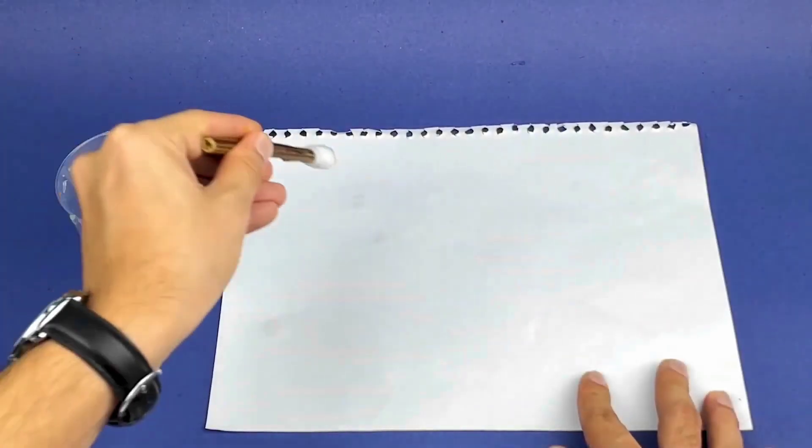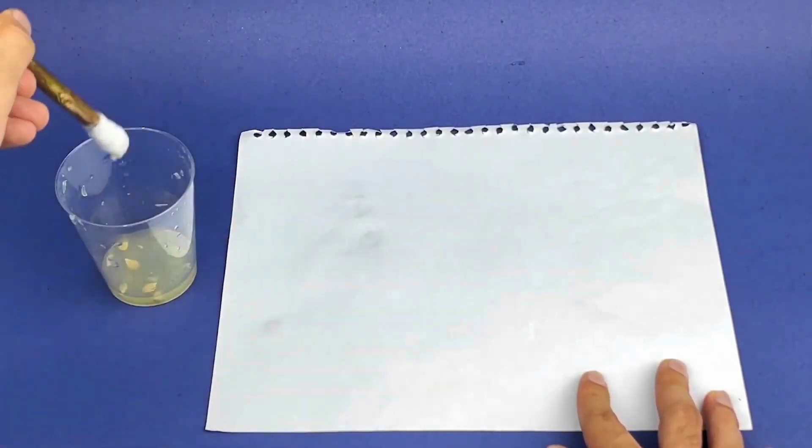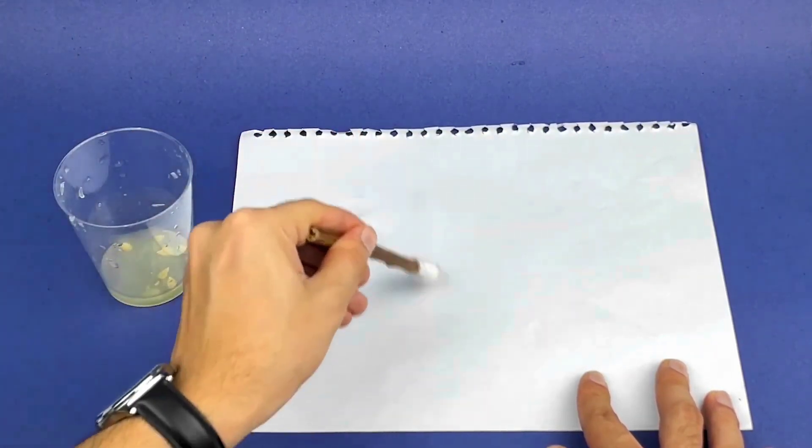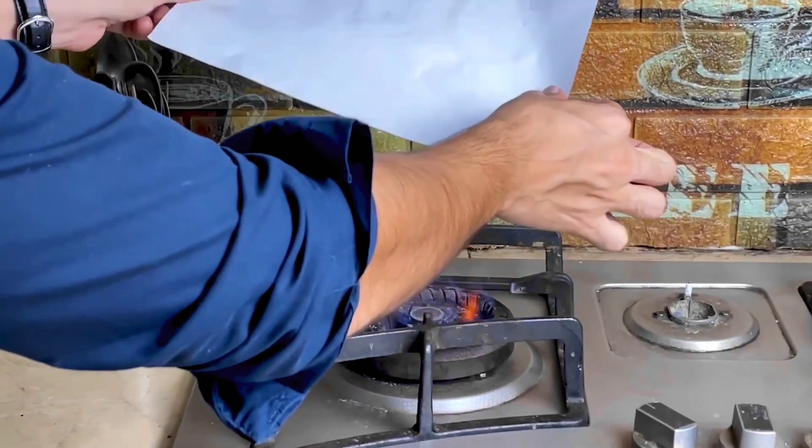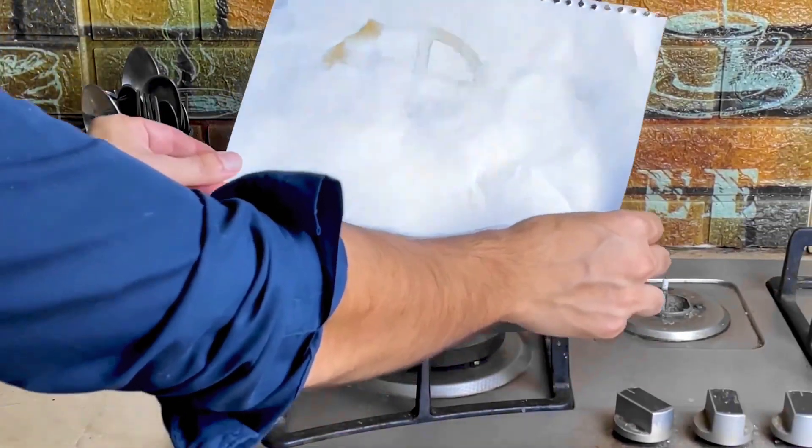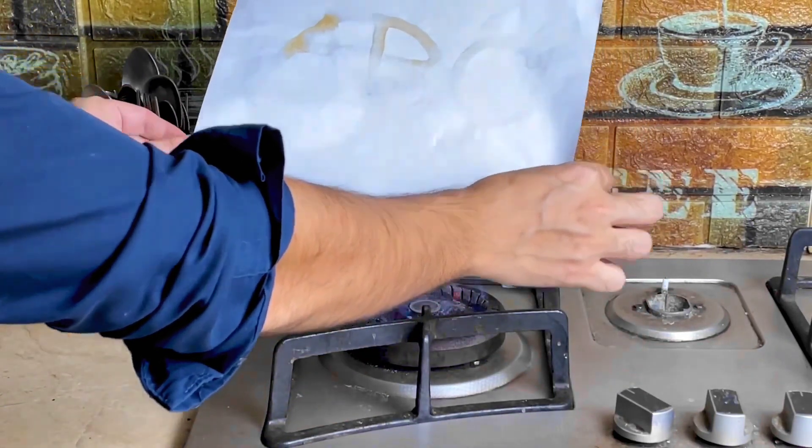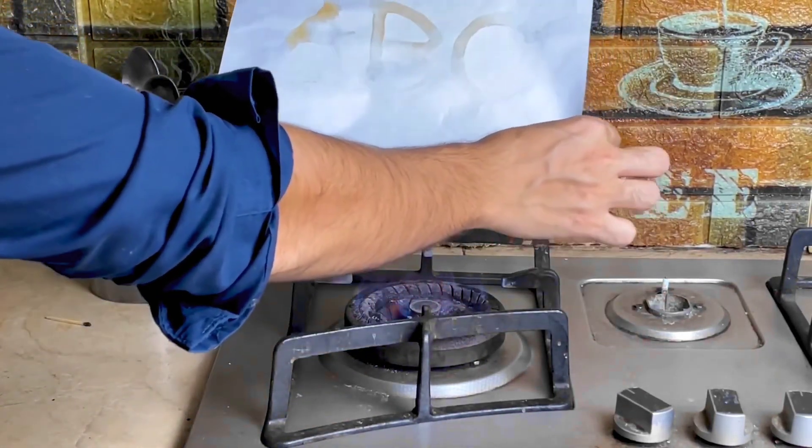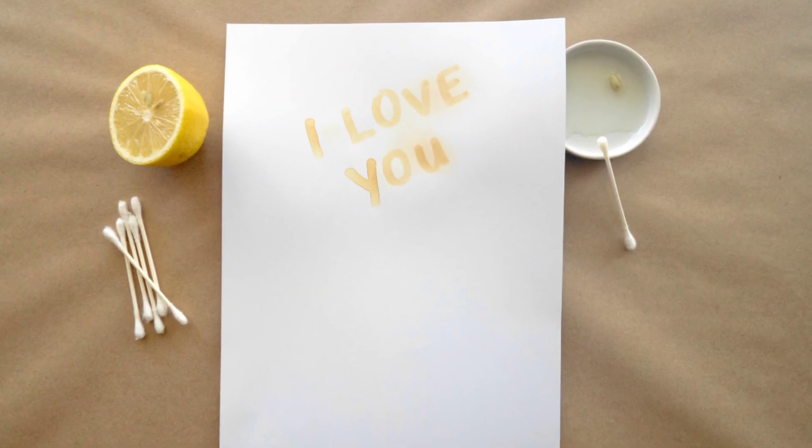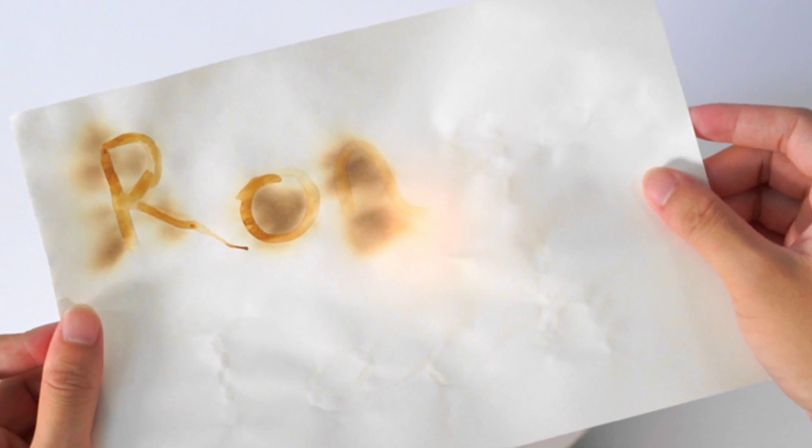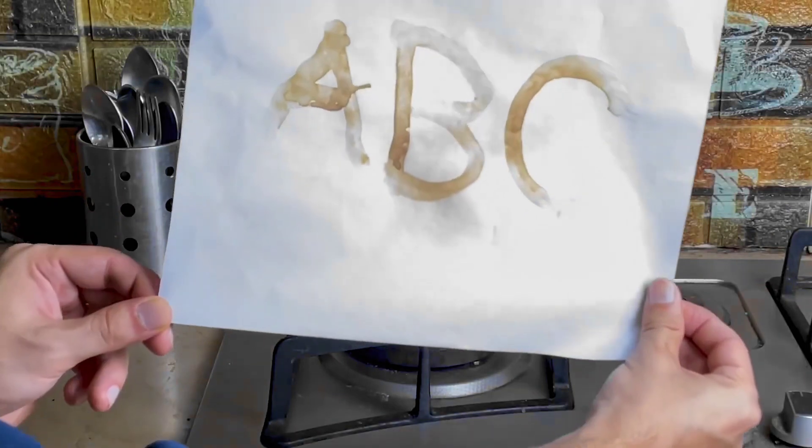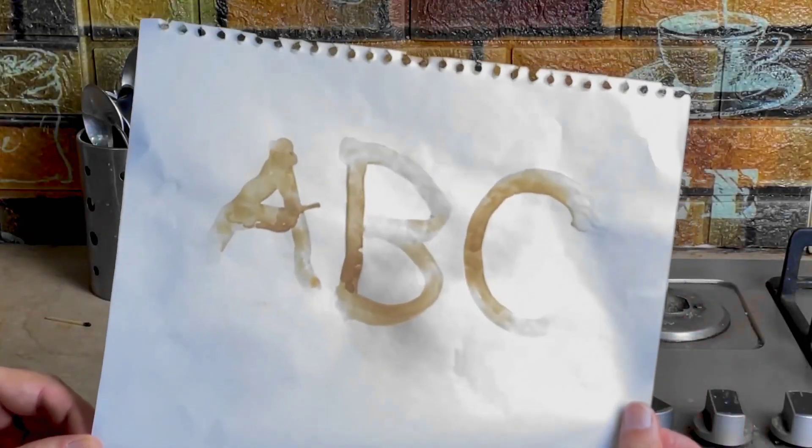Start by dipping the cotton swab into the lemon juice and using it to write a message on the paper. Make sure to let the lemon juice dry completely, leaving behind an invisible message that is not visible to the naked eye. To reveal the secret message, hold the paper near a light bulb or expose it to heat. With adult supervision, the heat will cause the lemon juice to oxidize and turn brown, making the hidden message magically appear. Kids will enjoy playing spies and sending secret messages to each other using this fun and simple experiment. It's a great way to introduce them to the concepts of chemical reactions and oxidation, all while having fun with invisible ink.